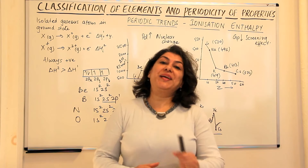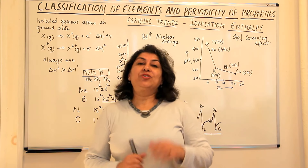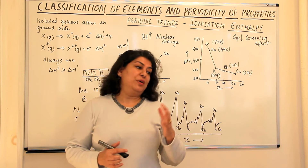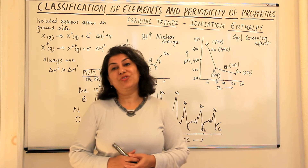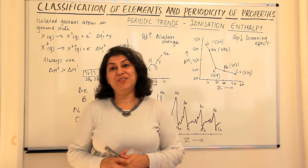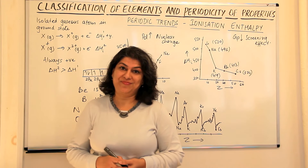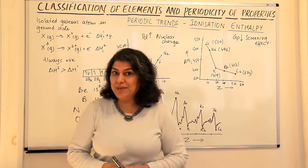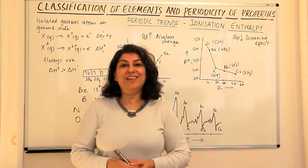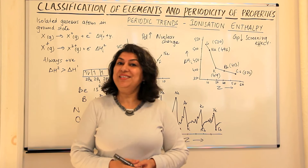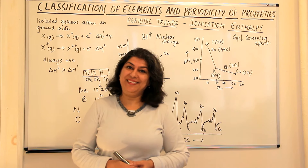So these were the trends in ionization enthalpy. After this we'll cover two more properties before moving on to the chemical properties in the periodic trends. If the video helped you, please like it and subscribe to my channel, recommend it to your friends, and please return for more videos in chemistry. Bye-bye.